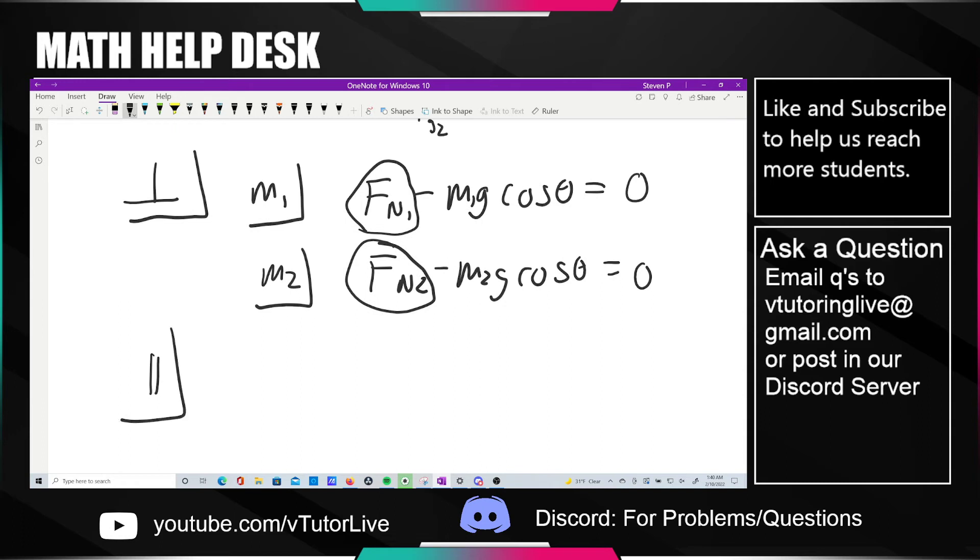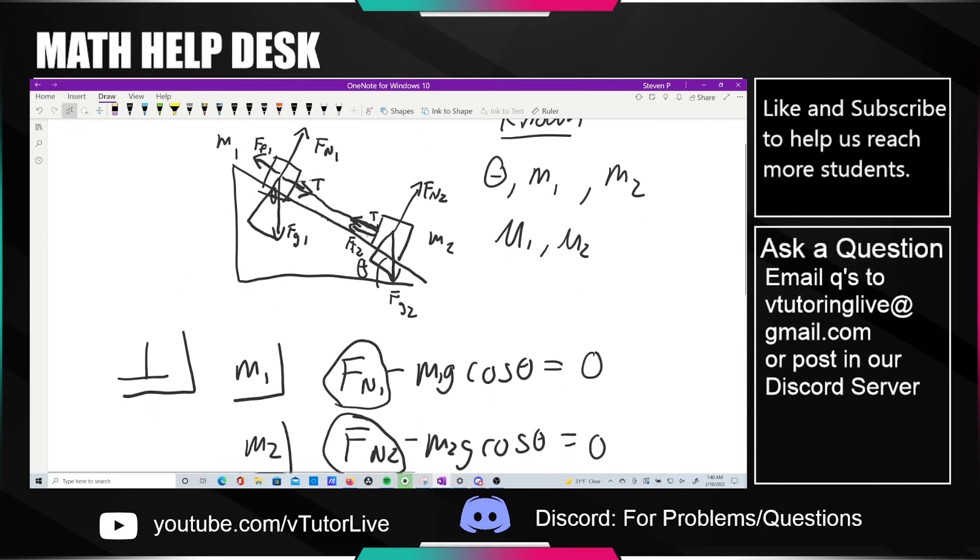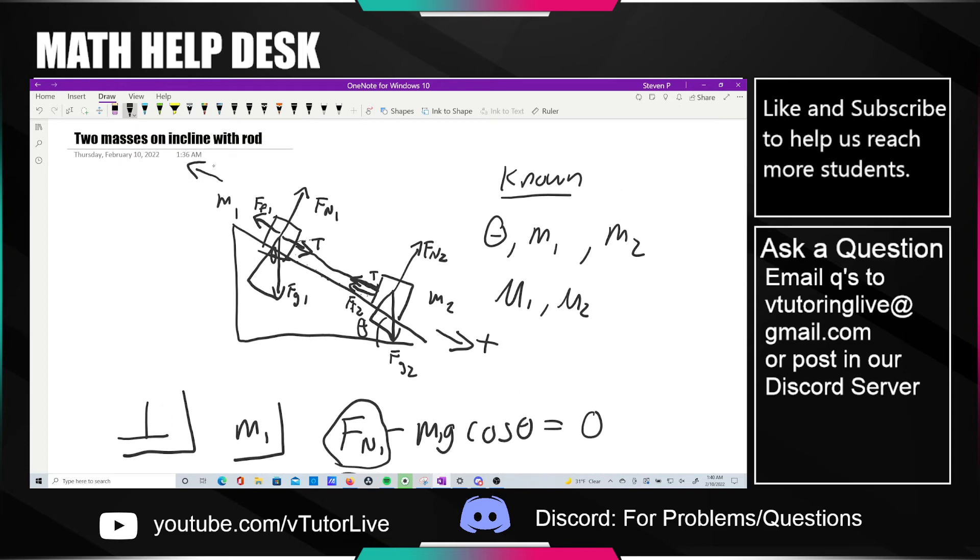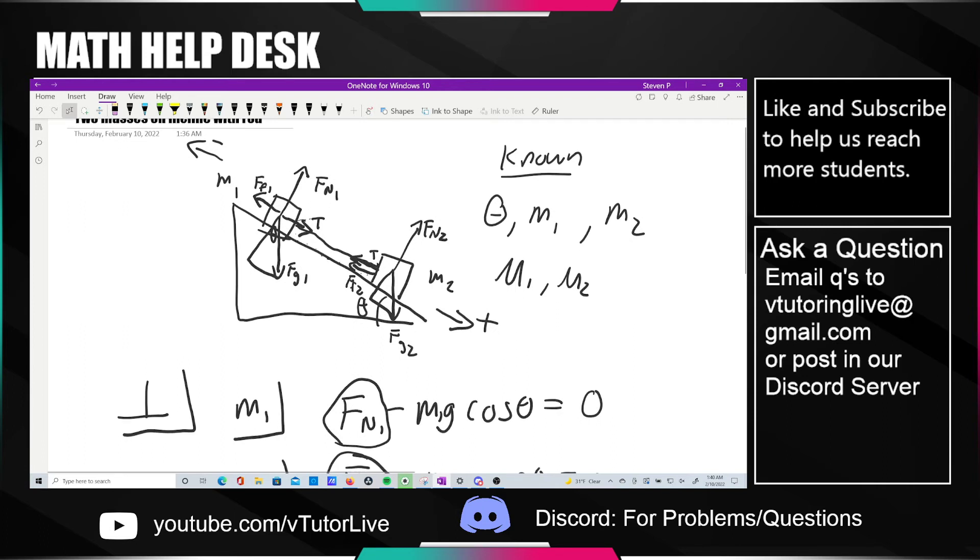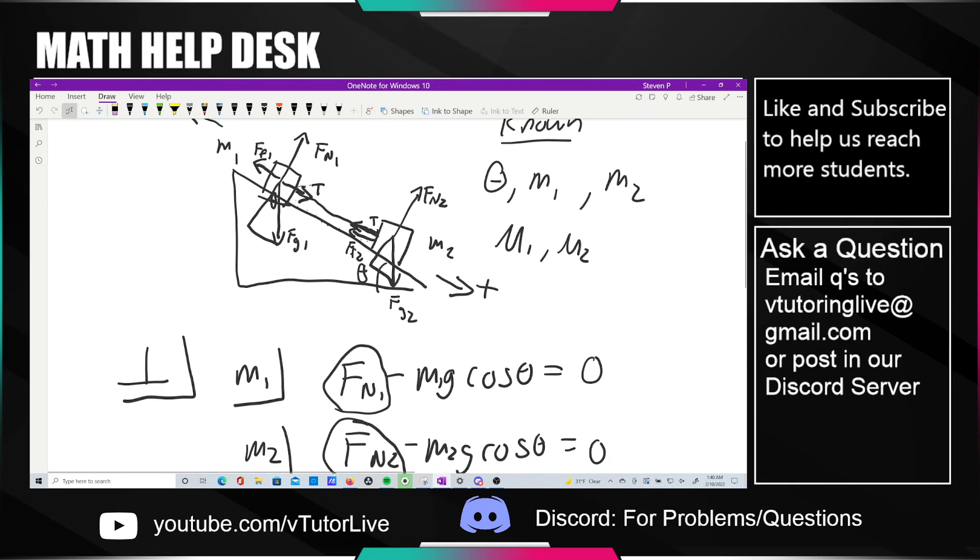So now we're going to look at the parallel components for M1, starting with M1. So for M1, it looks to me like, well, let's define a positive direction just for the sake of our sanity. But let's say going down the slope is positive, and let's say upwards the slope is negative. And I choose these signs because it looks... I usually like taking the direction of motion to be positive. But it's ultimately all just your own convention, right, do whatever floats your boat.